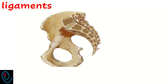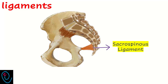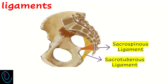Another two ligaments are attached to the sacrum. The sacrospinous ligament is a triangular ligament with the apex attached to the ischial spine, while the base is attached to the lateral border of the coccyx and the fifth sacral vertebra. The sacrotuberous ligament is another triangular ligament with the apex attached to the ischial tuberosity, while the base is attached to the lateral border of the sacrum and the coccyx.